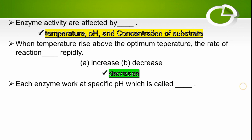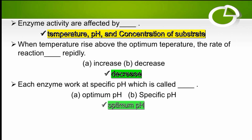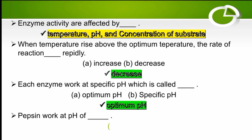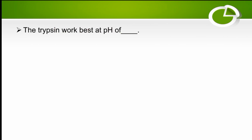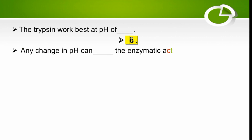Each enzyme works at a specific pH called the optimum pH. Pepsin works at a pH of 2, and trypsin works at a pH of 8. Any change in pH can lower the enzyme activity.